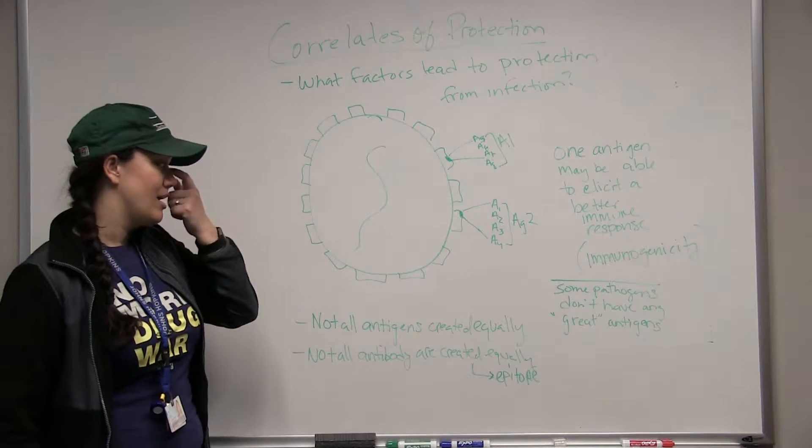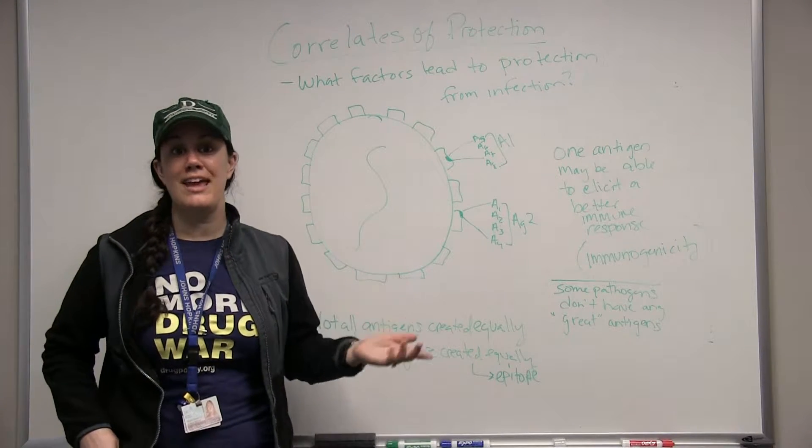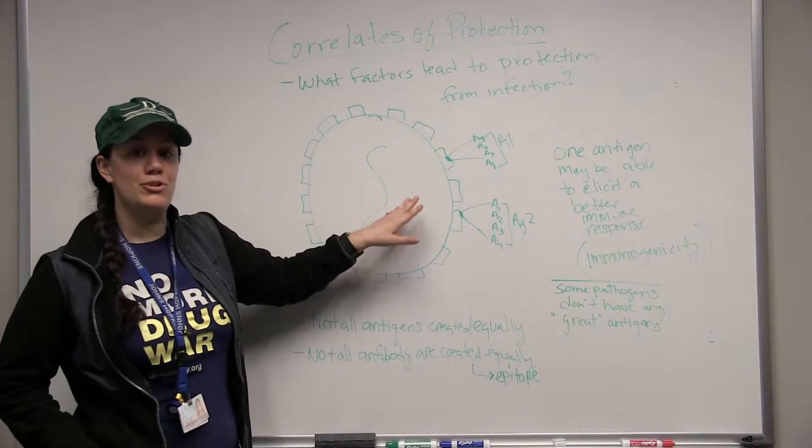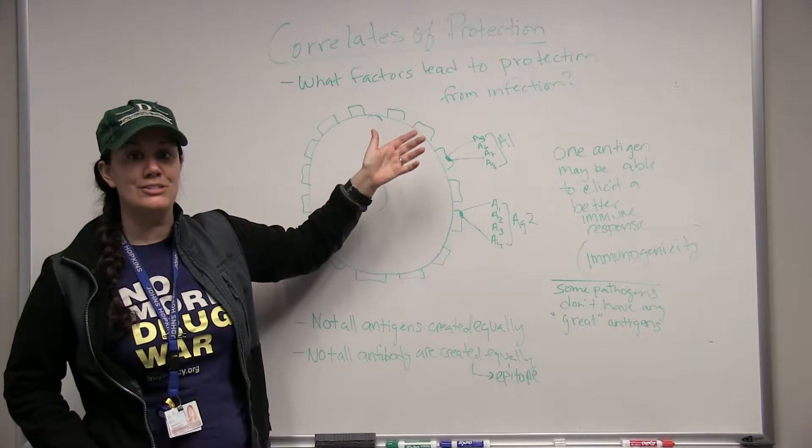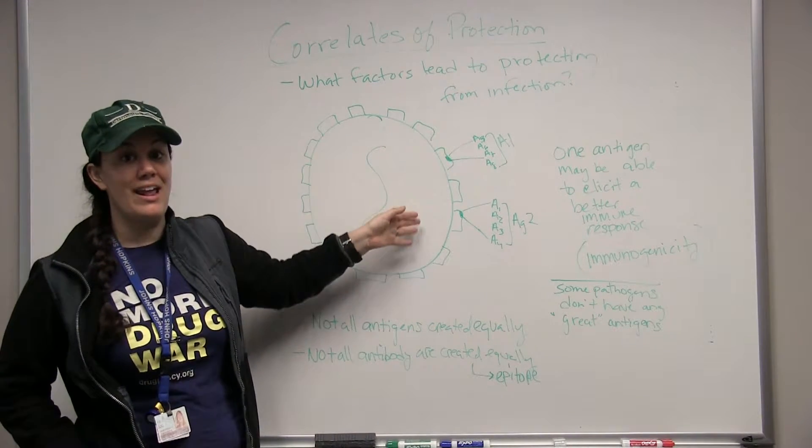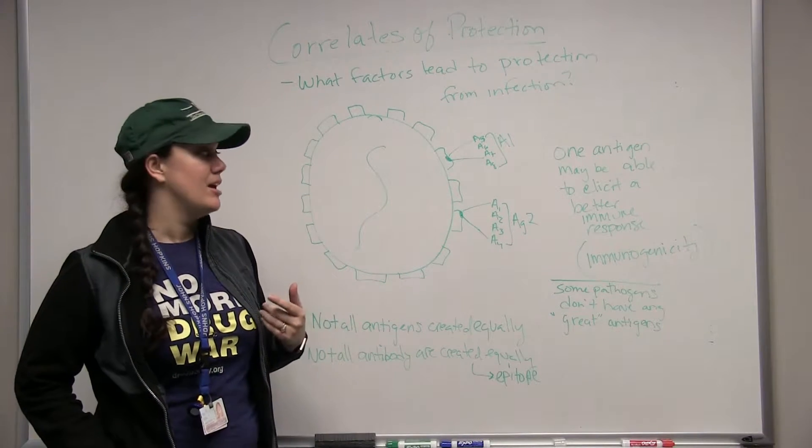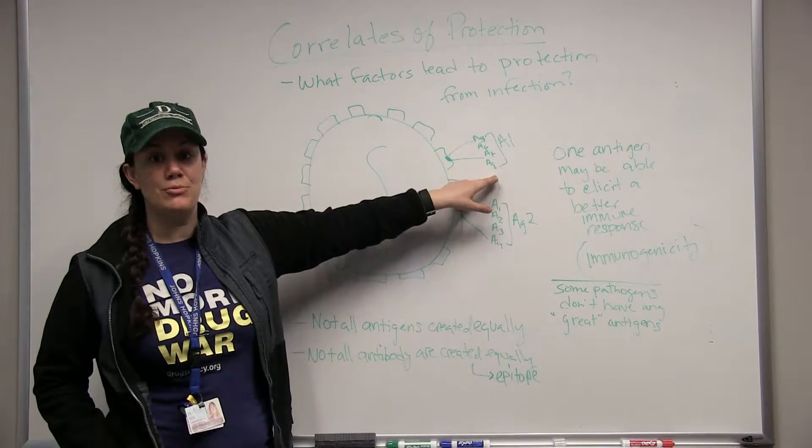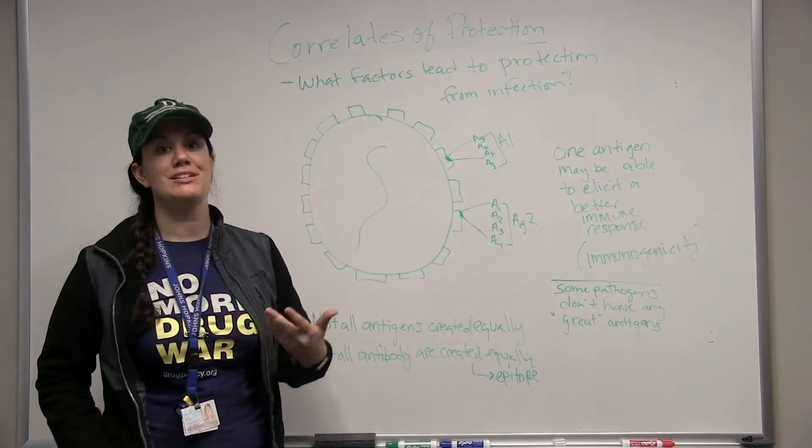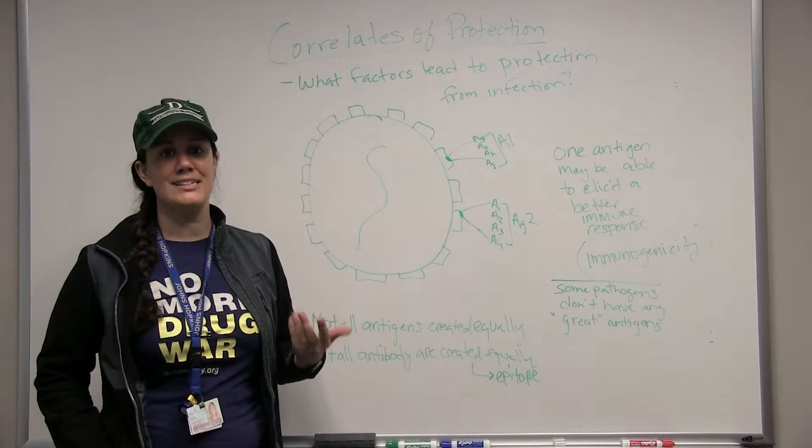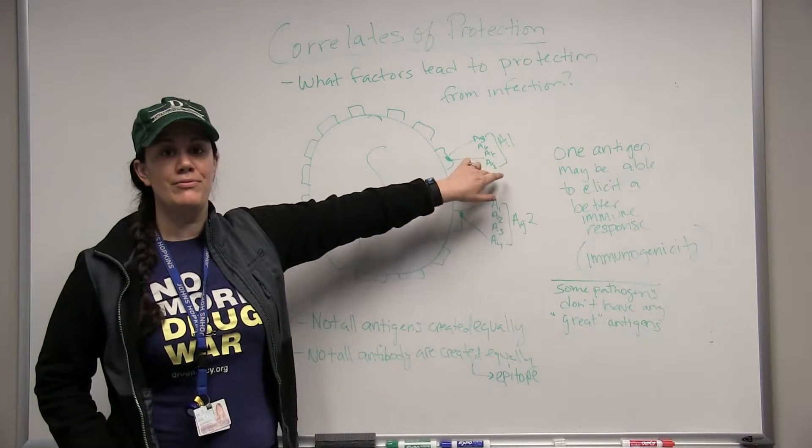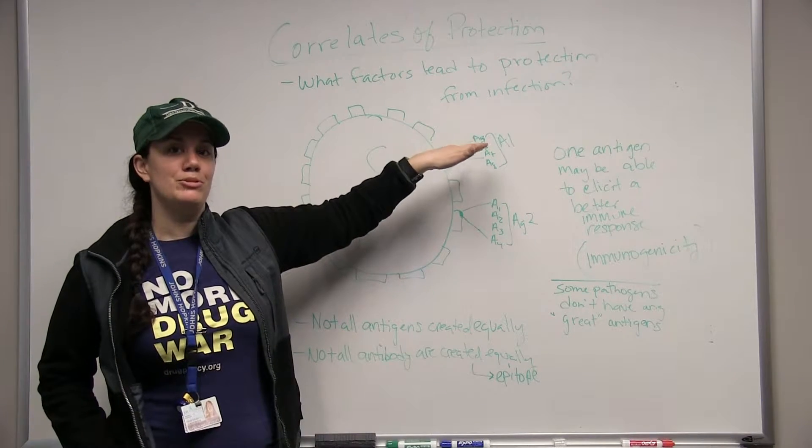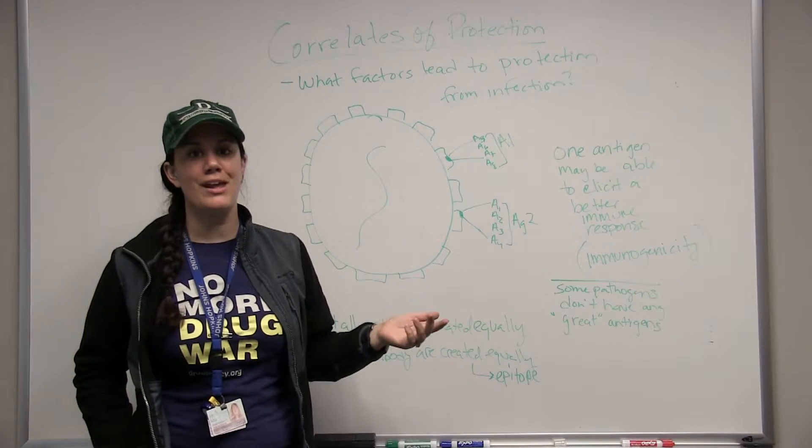Let's consider the antigen. Not all antigens are created equally. Some antigens are better at eliciting a long-term robust memory response than others. I've drawn our virus here with lots of different antigens on the surface. We might find after experimentation that antigen two is actually rubbish at eliciting an immune response and antigen one is actually protective. If we were to design a vaccine candidate to go into clinical trial, we would want to focus our work on antigen one and making sure that in this vaccine candidate we really try to elicit an immune response to just that antigen.